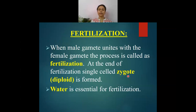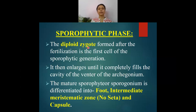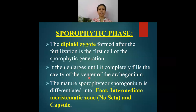The male gamete unites with the female gamete leading to the formation of a diploid zygote. Water is also essential to complete this process of fertilization in Anthoceros. After formation of the diploid zygote, the sporophytic phase begins — the zygote is the first cell of the sporophytic generation. It enlarges until it completely fills the venter of the archegonium.